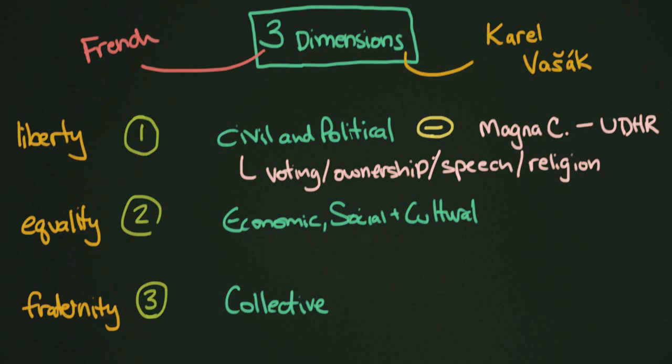Now we've got this second dimension: economic, social, and cultural. These are positive rights. If you remember what positive rights are, it means that the state has to jump in—the society has to jump in at the very least.